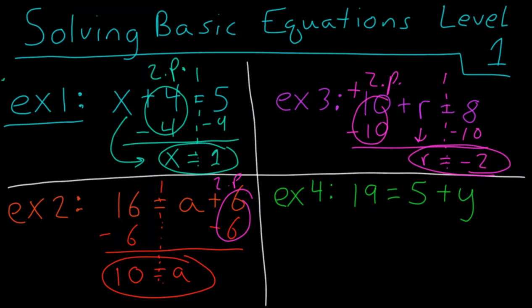And lastly, we have example 4 in this nice green color. We have 19 equals 5 plus y. And if I wanted to get the letter y by itself, well, I can draw my little imaginary wall here. And to get rid of a positive 5, I can subtract 5. And what I do to the right, I have to do to the left. And 19 minus 5 is, of course, 14 is equal to y.